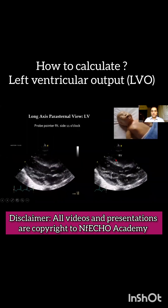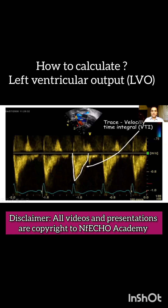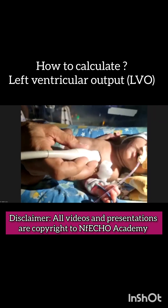You trace the outline of the Doppler outflow and calculate the VTI, that is the velocity time integral, which is used to calculate the LVO. Next, there is a demonstration of how to get the apical five chamber view and perform the aortic VTI measurement.